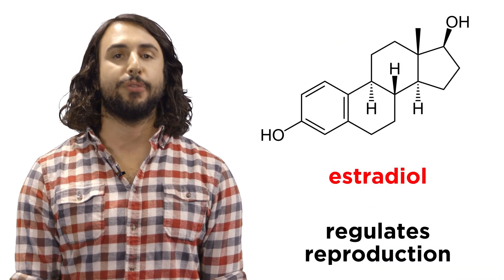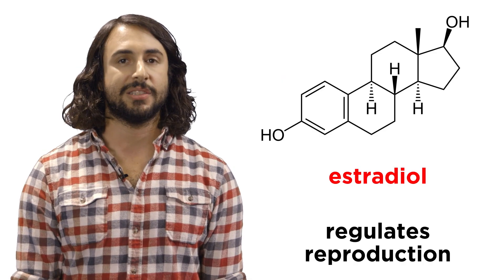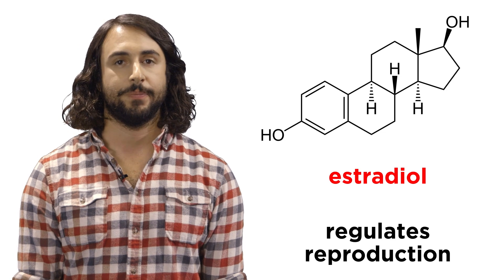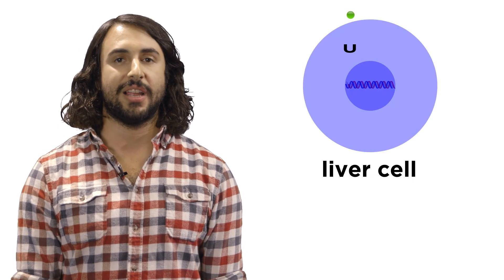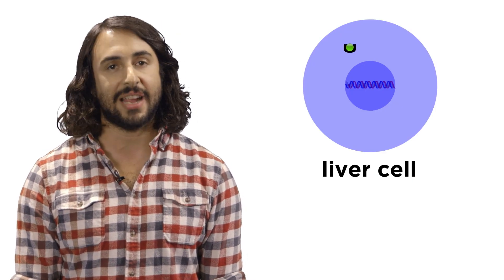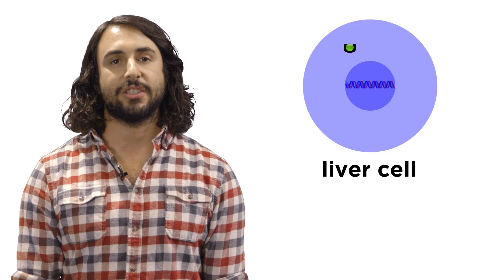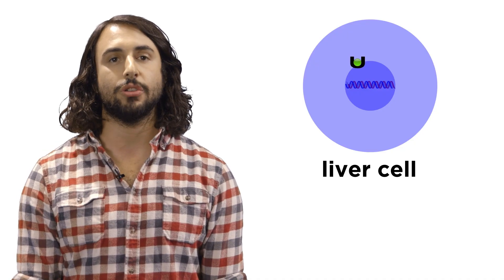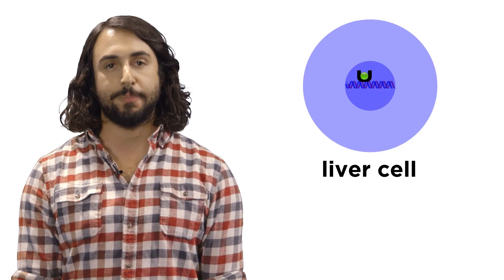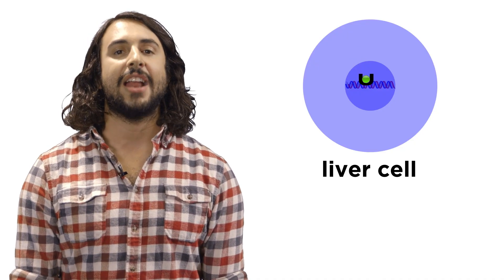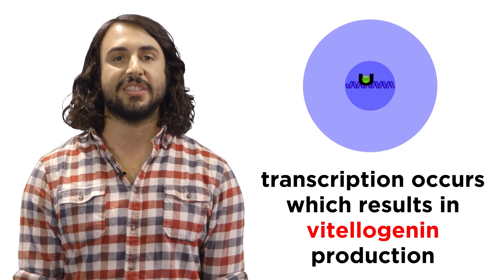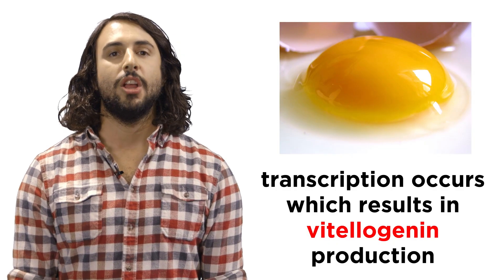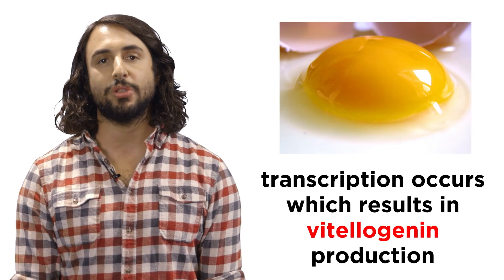For example, in many vertebrates like birds and frogs, estradiol is a hormone that regulates female reproductive function. This can enter a liver cell and bind to a receptor in the cytoplasm. This complex will then undergo a conformational change due to the binding that allows it to enter the nucleus, bind to a specific DNA sequence, and transcribe the gene for vitellogenin. Once produced, this protein is then transported to the reproductive system to produce egg yolk.